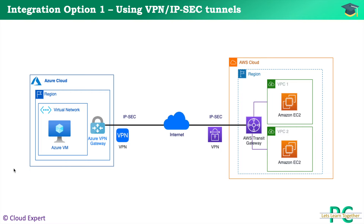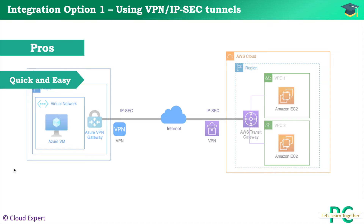One important point: Transit Gateway is a regional device. If you have a requirement to integrate multiple regions, you need to provision a separate Transit Gateway in each region, then create a Transit Gateway peering connection between the regions. Now, let's review the pros of this approach. First, this is a quick and easy way to set up — creating an IPSec tunnel typically takes four to six hours, so you can establish the tunnel within one business day.